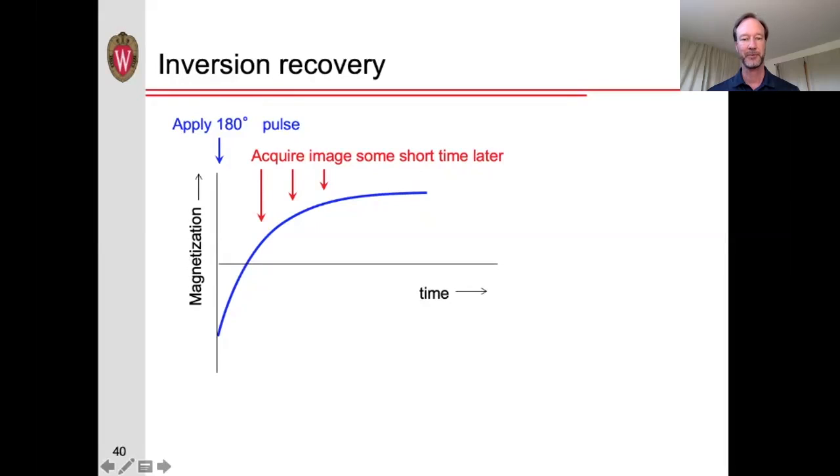So, for example, we can create images where we have removed the signal from the CSF. That is, all the signal from the CSF will appear black or dark in the image. It's a technique called CSF nulling. So we apply a 180-degree pulse. We wait for a certain period of time until that T1 crosses the zero. And then we crush the remaining transverse magnetization and then acquire our image from that.